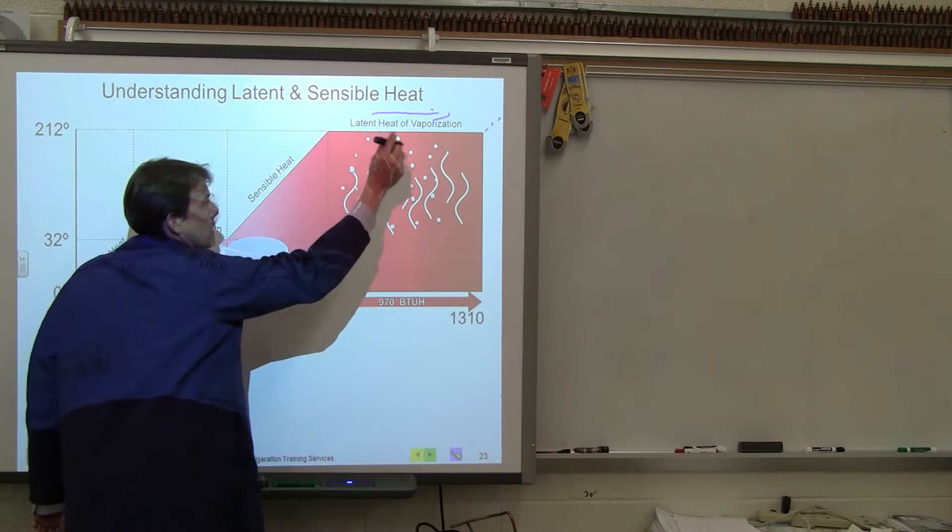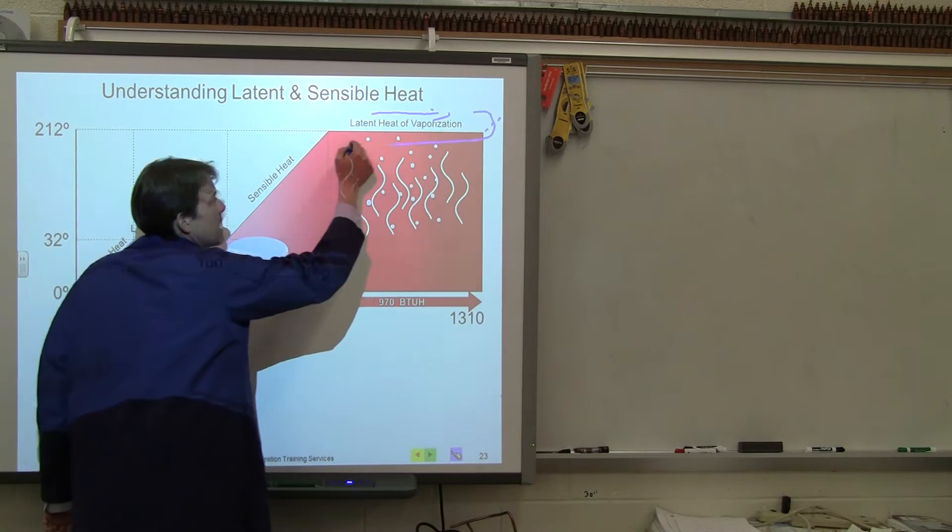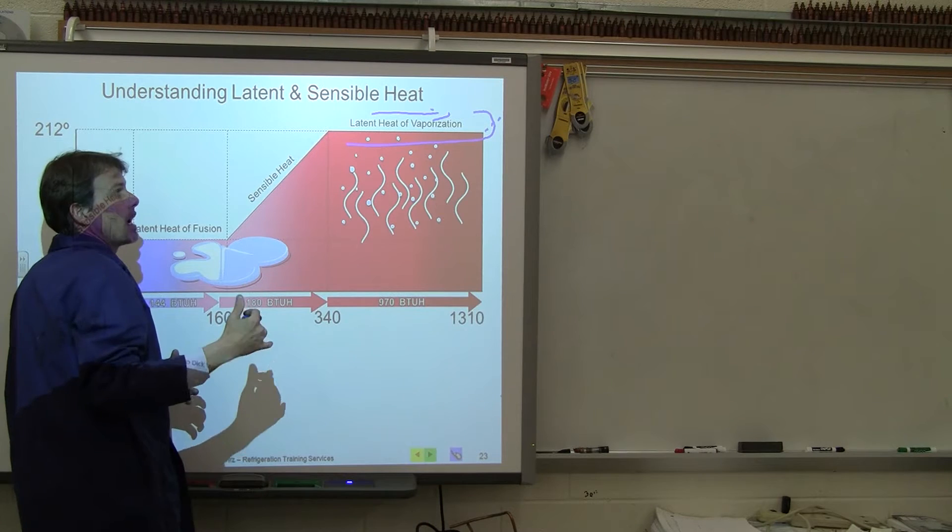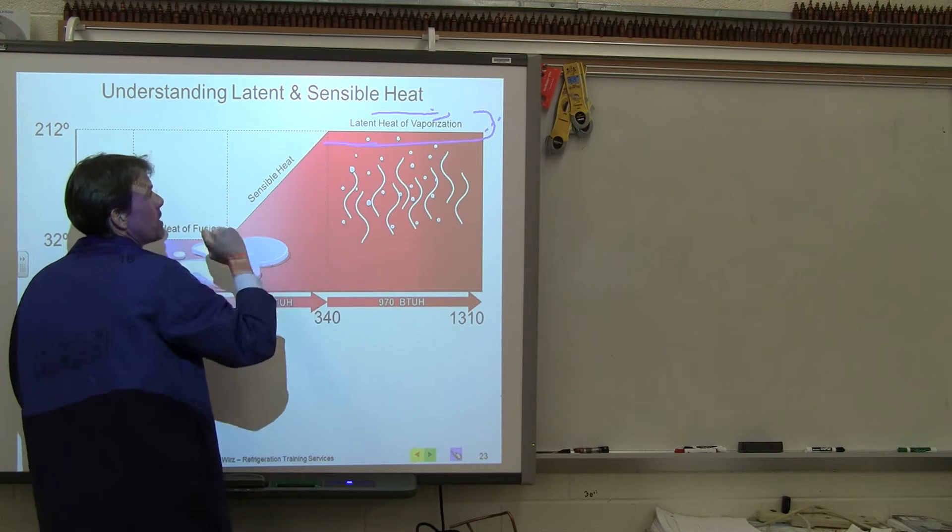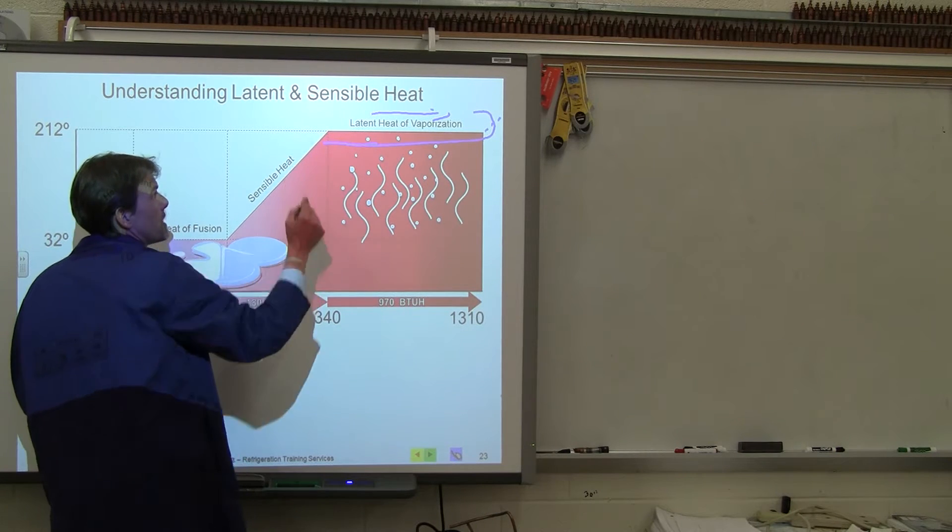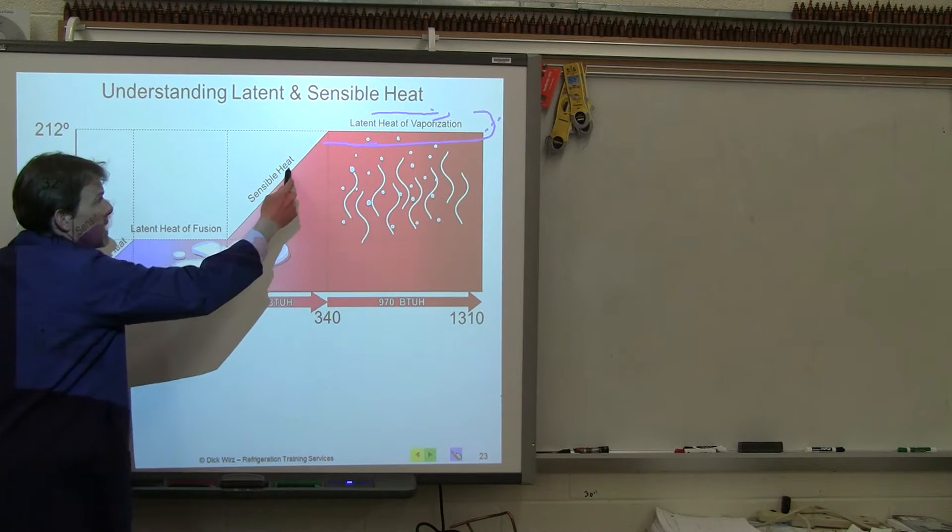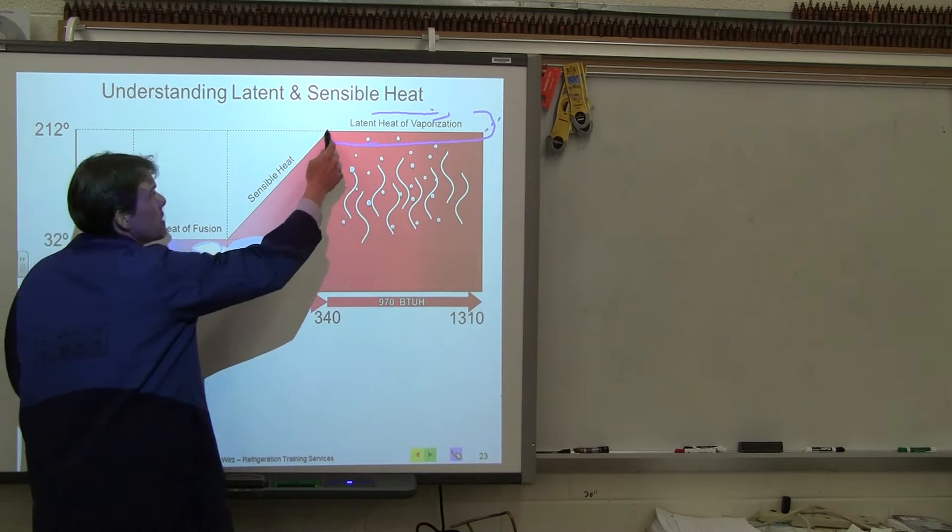Then we come back down into here for the condensing out in the outside unit, for the condenser when we're rejecting our heat. The subcooling comes over here when we get a few degrees below the saturation temperature. We can get really any temperature below, and that would be subcooling.